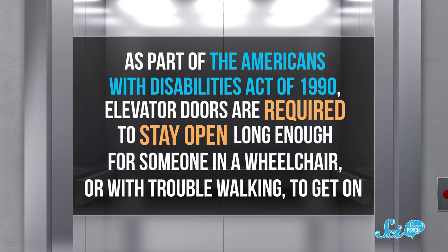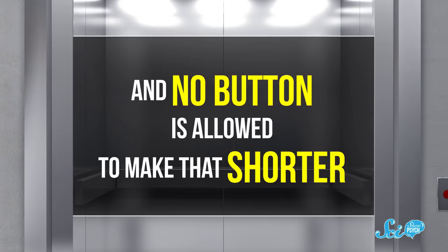As part of the Americans with Disabilities Act of 1990, elevator doors are required to stay open long enough for someone in a wheelchair or with trouble walking to get on, and no button is allowed to make that shorter. Firefighters can override it, but for the rest of us, it's a fake.